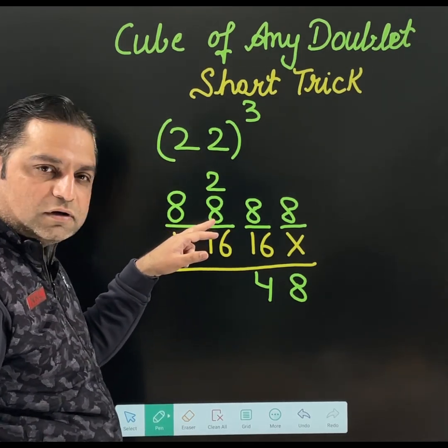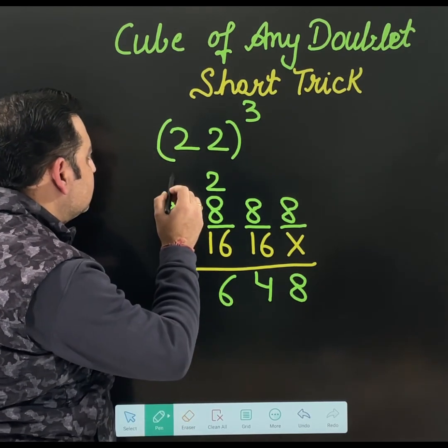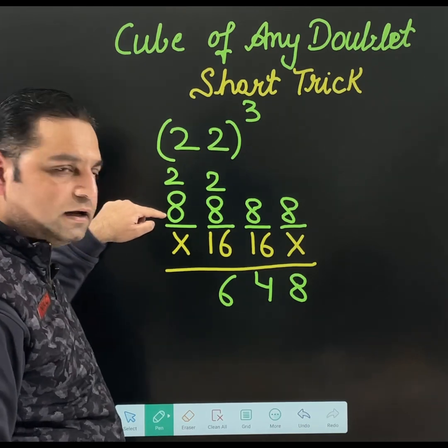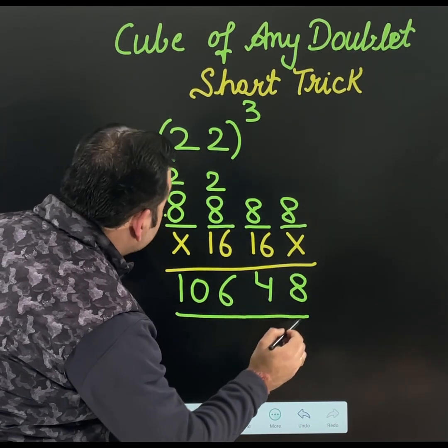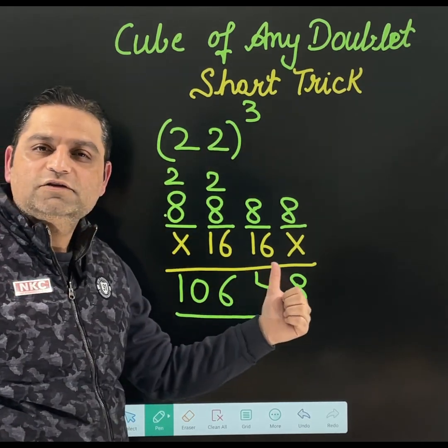16 plus 8 is 24. 24 plus 2 is 26. I am writing 6 here and 2 is carried to the next value. Finally, 8 plus 2 is 10. So that means 22 cube is 10648.